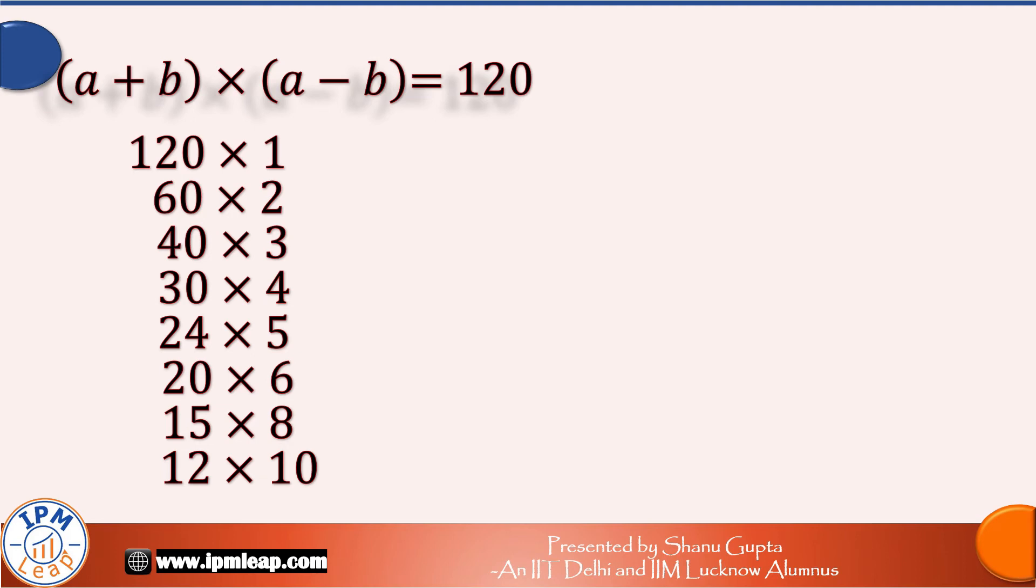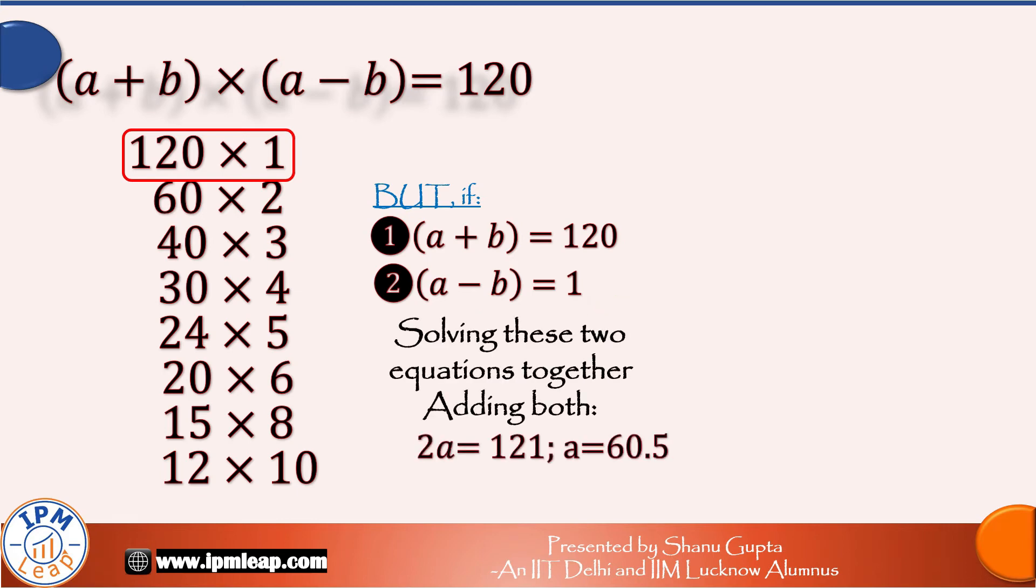But there is a catch here. Let's try out if 120 into 1 gives us a proper solution. So if we take a plus b is equal to 120 and a minus b is equal to 1 and adding them, we get 2a is equal to 121. So a is equal to 60.5 and subtracting we get b is equal to 59.5.